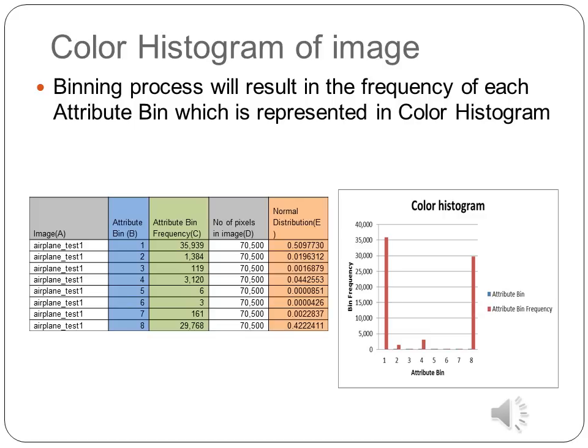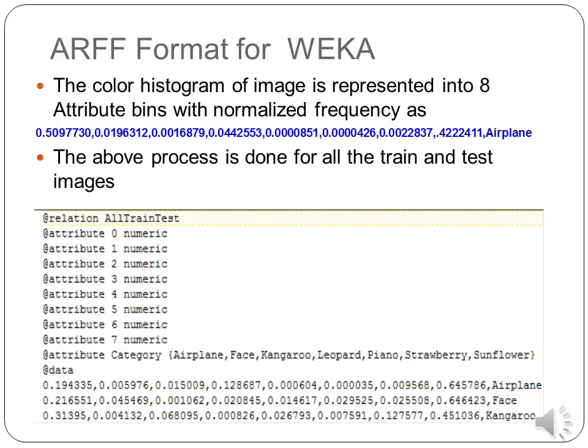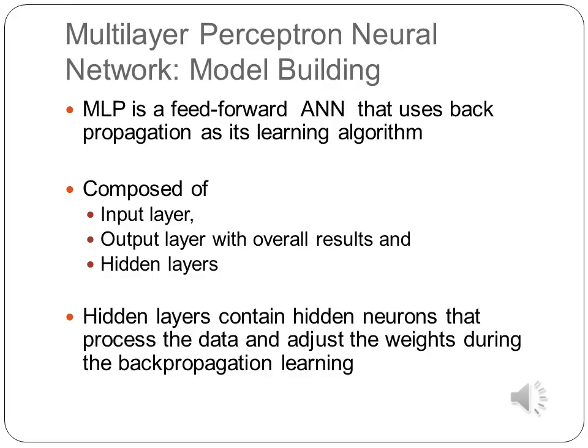The normalized frequency is calculated to handle cases where some images have 60,000 pixels while others have 70,000 pixels. Once the image is represented in normalized frequency, it is converted into the ARFF format. The whole process of pixel extraction, binning, taking the frequency, and calculating the normalized frequency is done for all test and train images, resulting in a file ready for input to Weka.